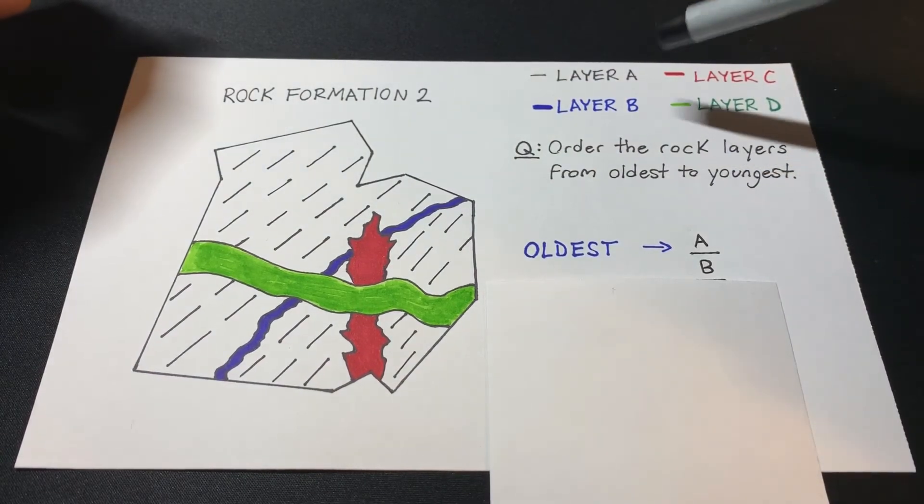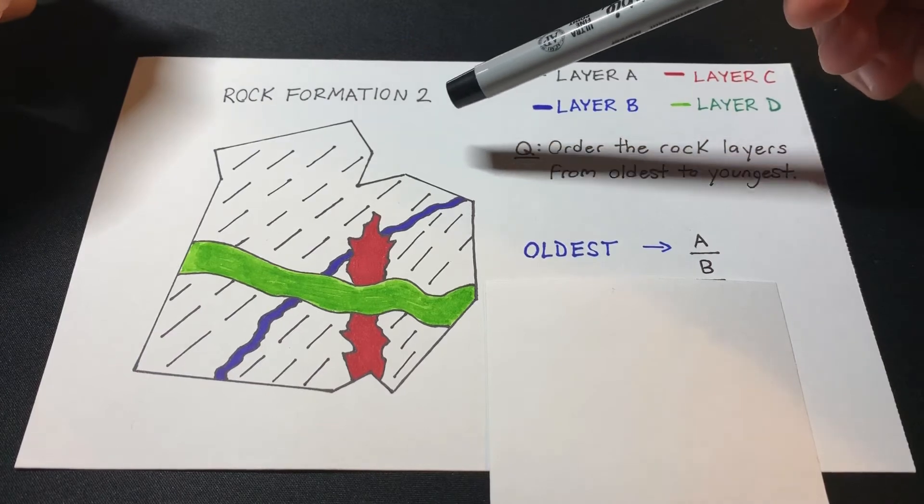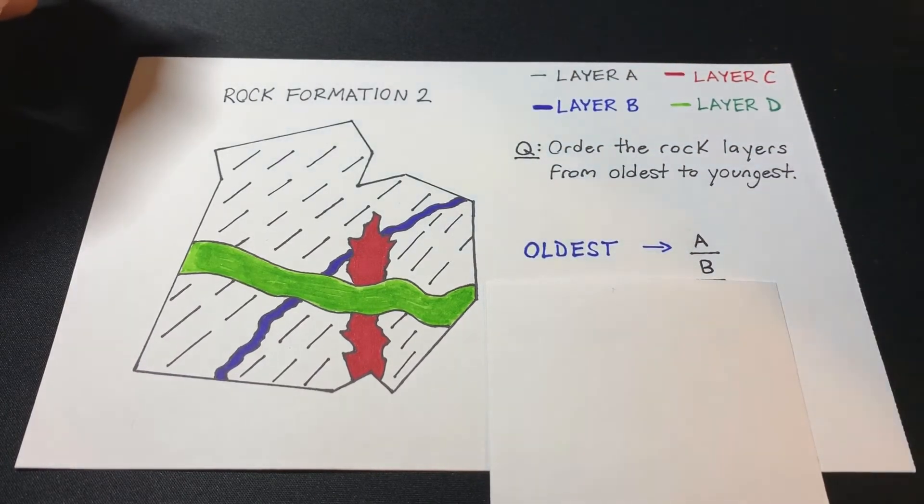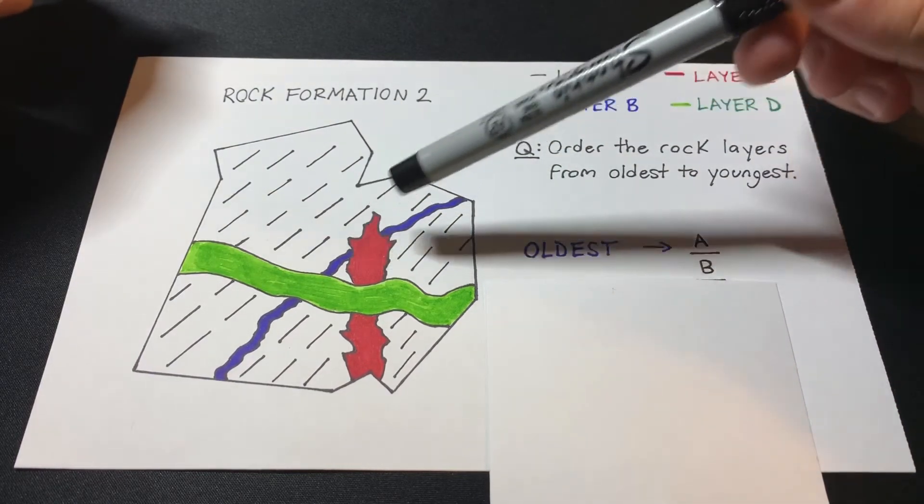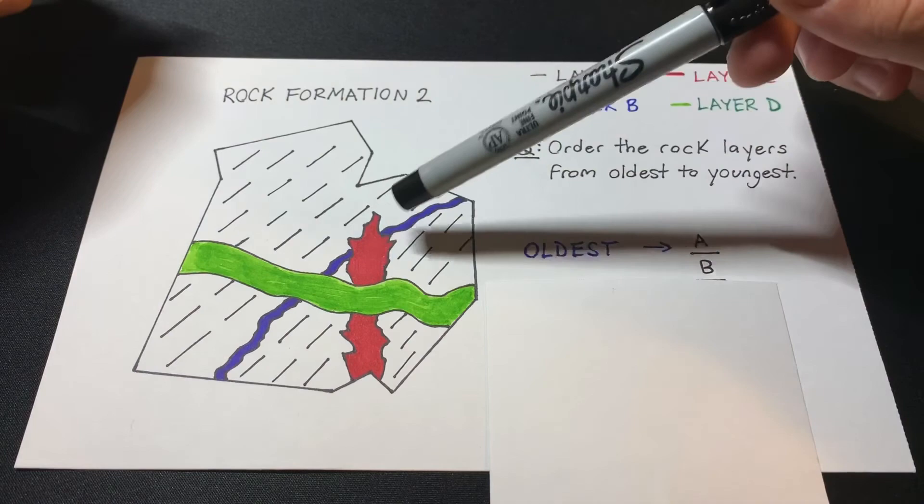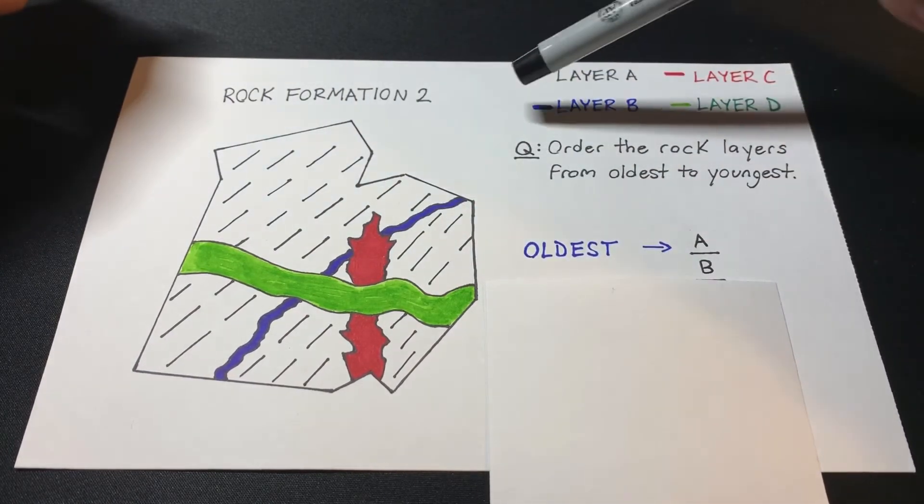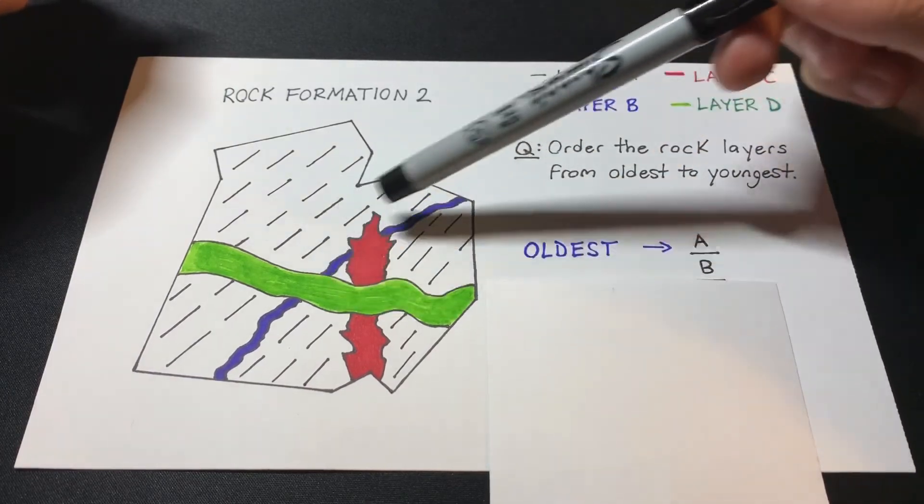The third oldest, again, is going to be the one that's overlapping A and B, but not overlapping the fourth rock layer, right? So that would make the red rock layer the third oldest because it's cutting across A in the background and the blue rock layer B, right?